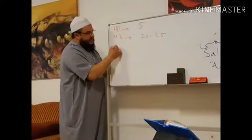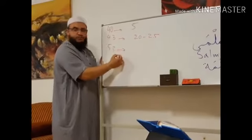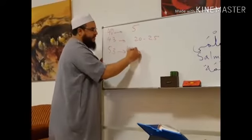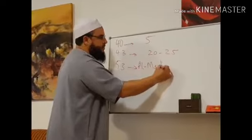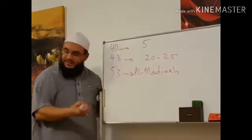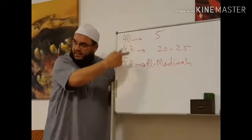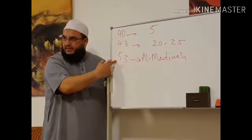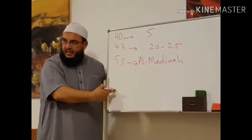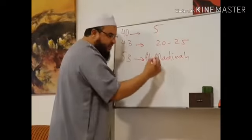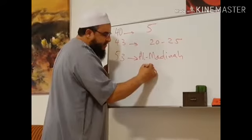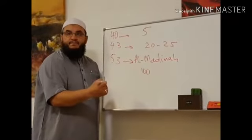He struggled. At the age of 53, he migrated to Medina. 13 years in Makkah, 10 years in Medina. When he migrated, the total of the Sahaba who followed him: 100 total.